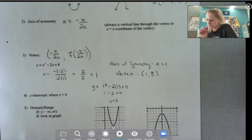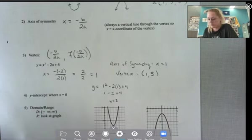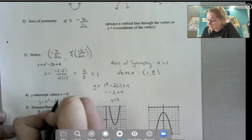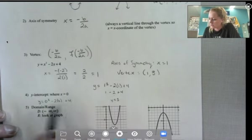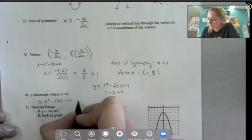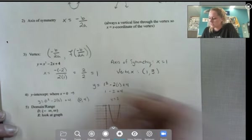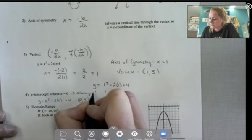The y-intercept is where x is 0. So I'm just going to use this previous equation and plug in 0 for x. So the other thing, because x is in these first two terms, it's actually always going to be c. So in this case, my y-intercept is 0, 4. But when it's in standard form, it's always c.